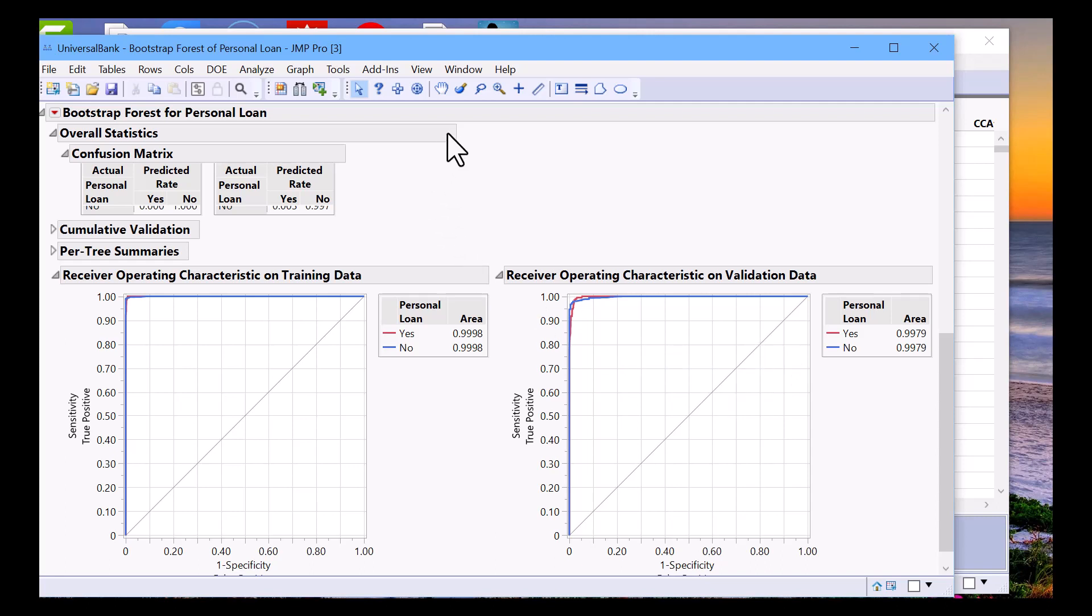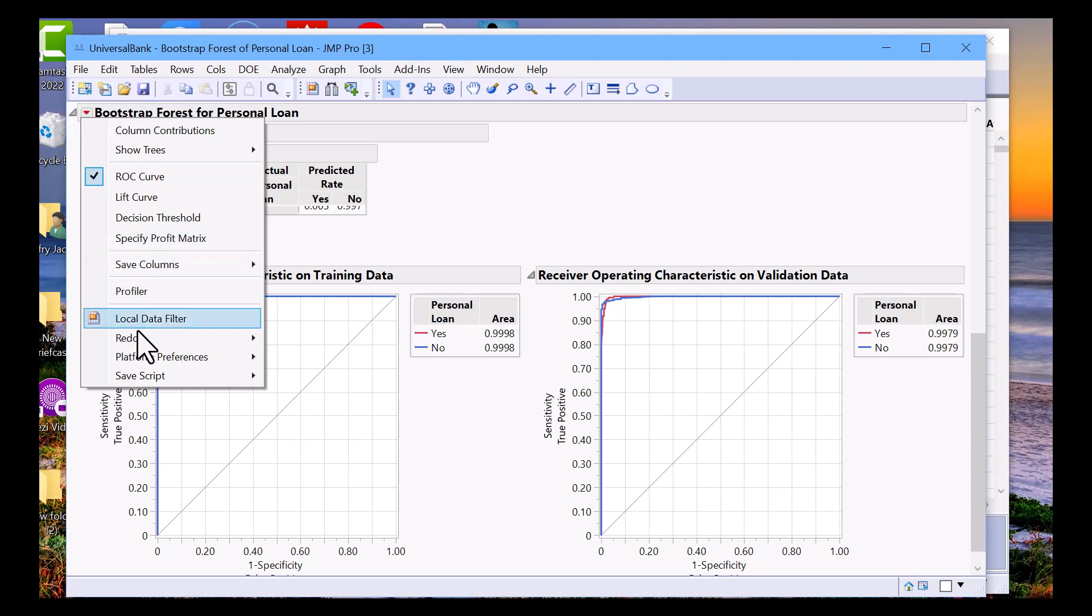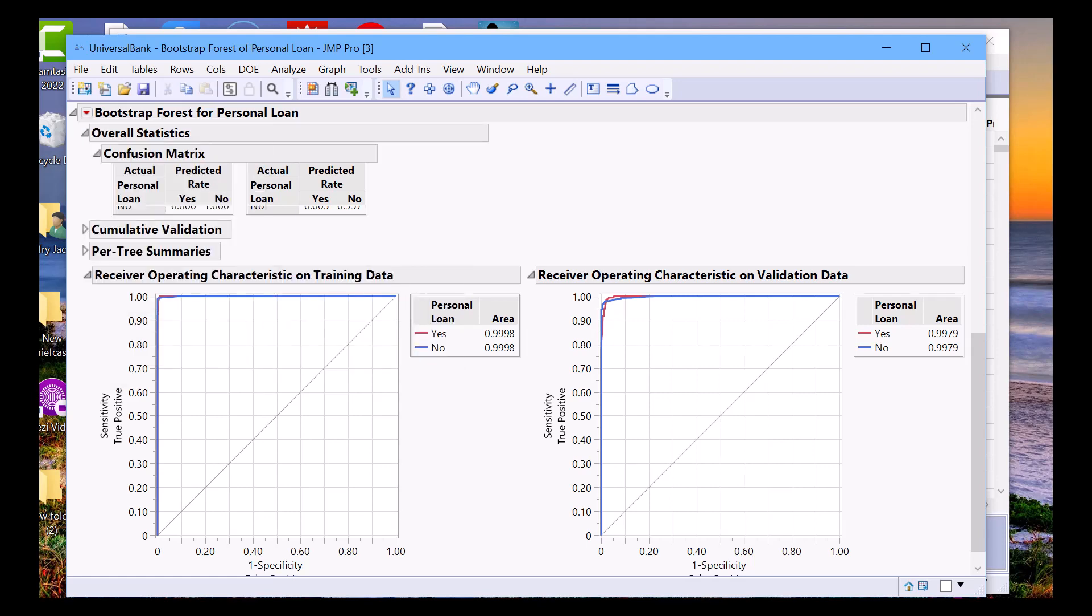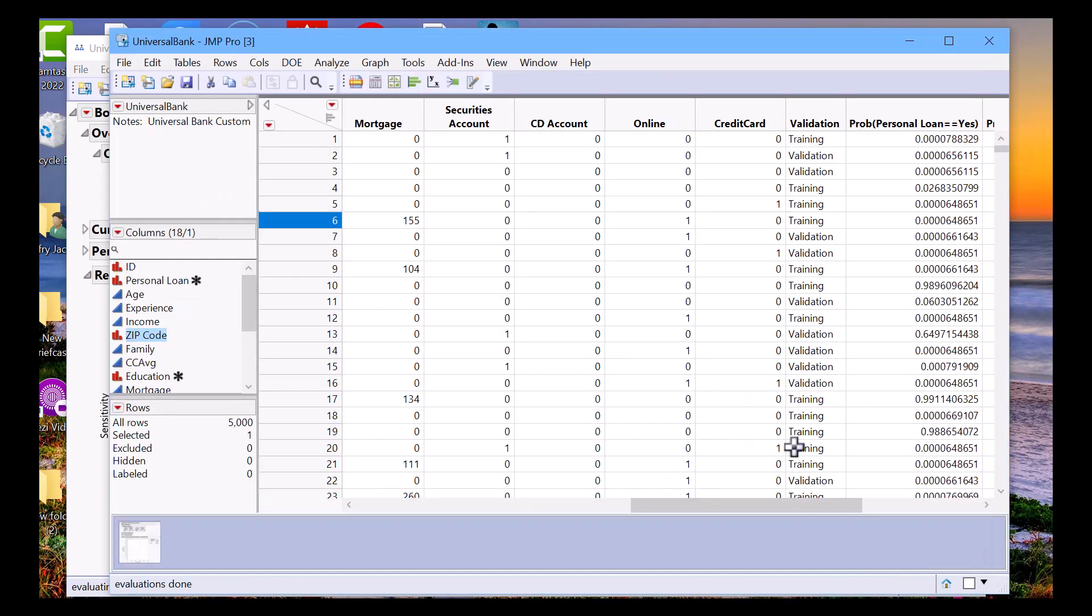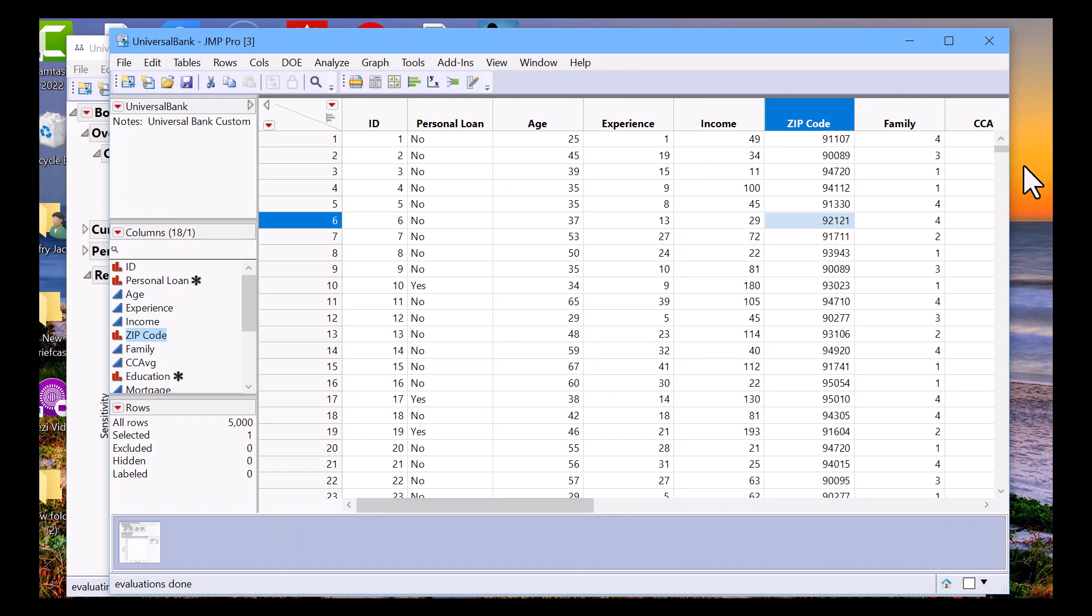Now, how would you score new data? For that, we can go to our little red triangle and then click on Save Columns, and we can save the prediction formula. This will add the formula to the table.